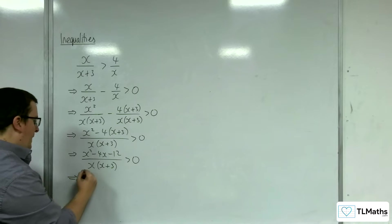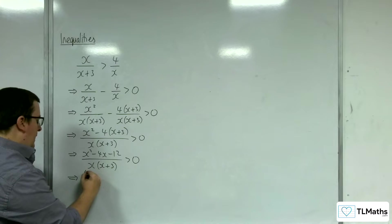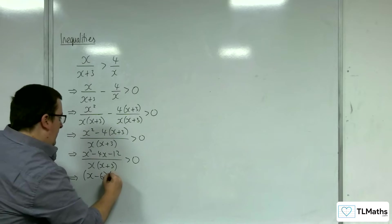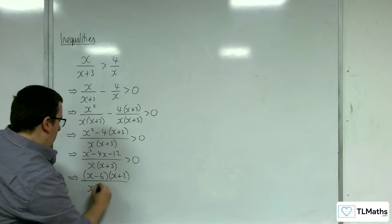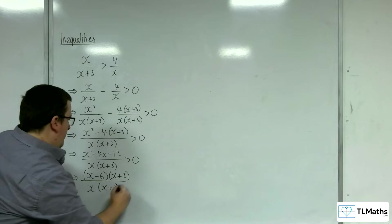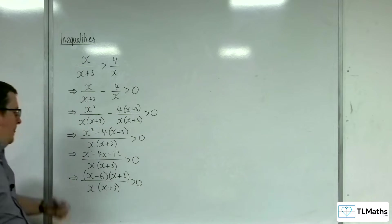And so that numerator factorises to x take away 6 x plus 2 over x x plus 3, and that's greater than 0.